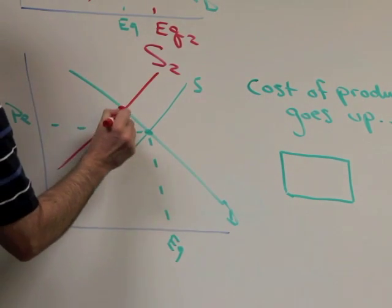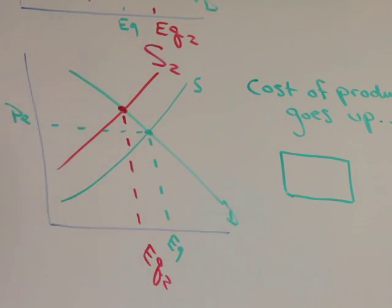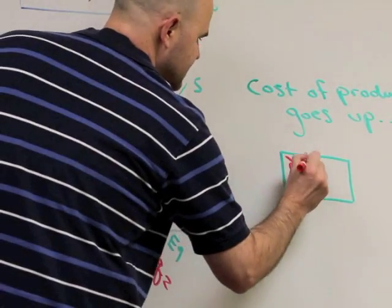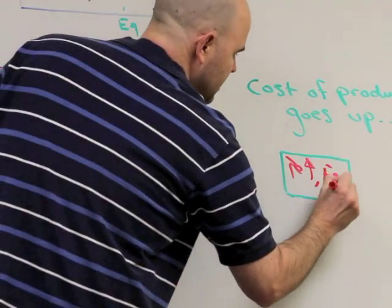Again, we get a new equilibrium point, trace down, we get a new equilibrium quantity, which has clearly gone down. We get a price, which is now higher, PE2. So, in this box, I'm going to put the price went up and our quantity went down.